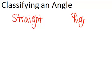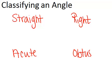An angle can be a straight angle, it can be a right angle, it can be an acute angle, or it could be an obtuse angle. So let's go through all four types.